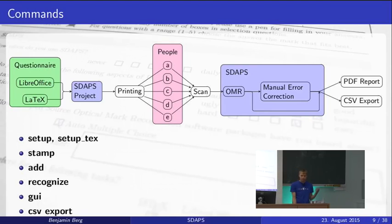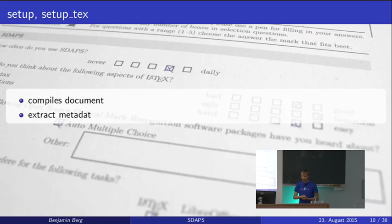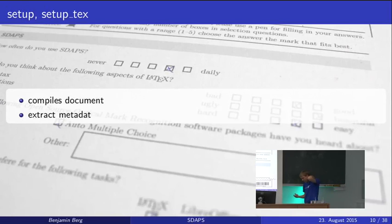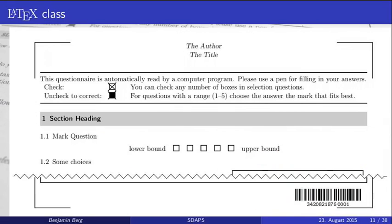The setup command simply compiles the LaTeX document — or takes an ODT file, parses it, reads in the PDF — extracts all the metadata from it, and then recompiles the document with the correct information overlaying the corner marks and so forth. After it has all the metadata, it can recompile to produce the printable document with the correct information.